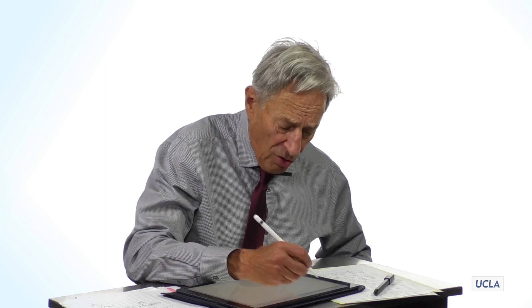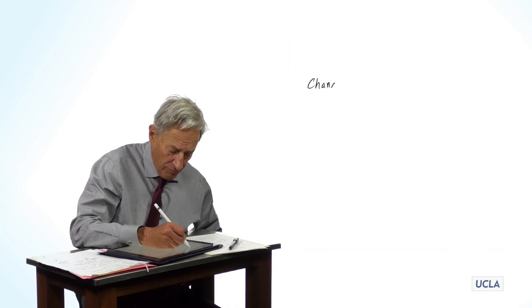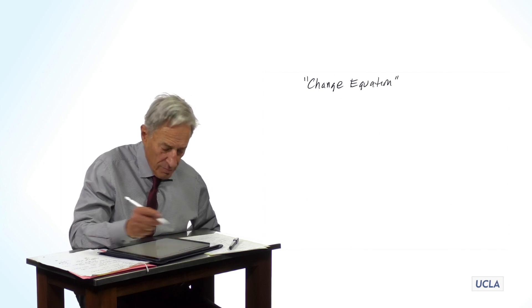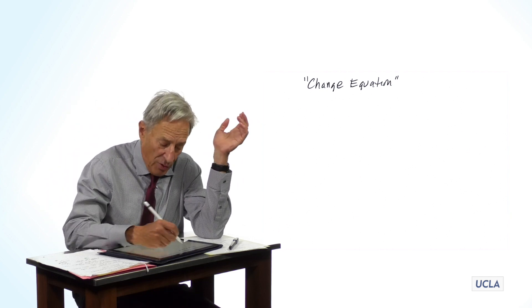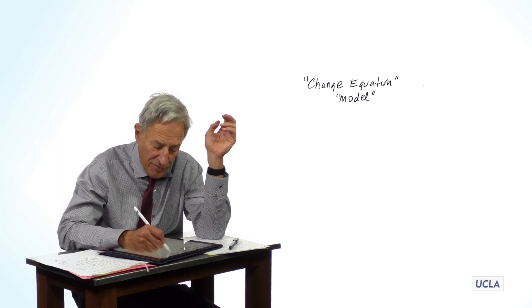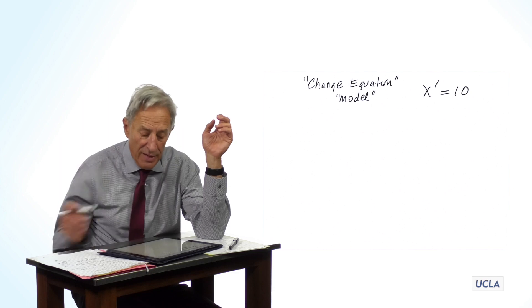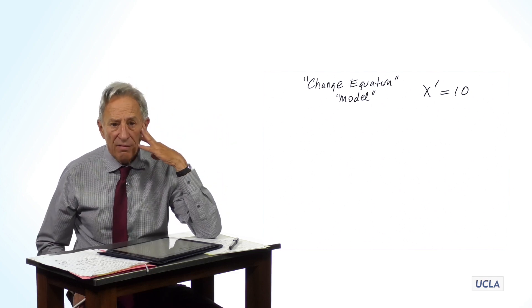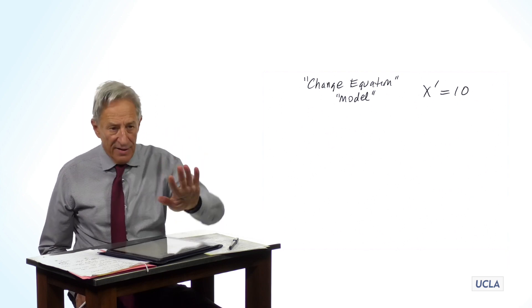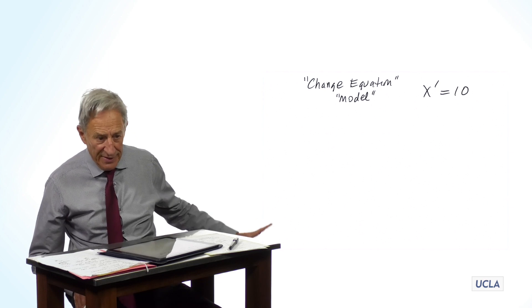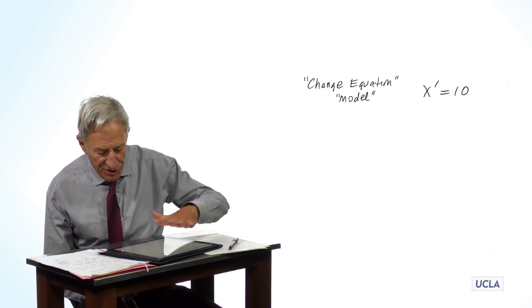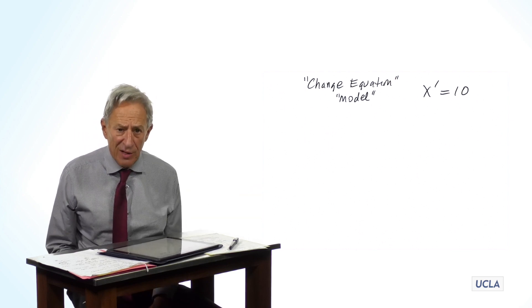And so our first simple change equation is now in front of us, it's x prime equals 10. And we're going to call that a change equation. So our first change equation, and change equation, another word for change equation, is a model. And so our first model or change equation is the model x prime equals 10. Now you ask, what do you do with that? And that's an excellent question that we're going to deal with today. But I'm going to hold that off right now. Right now, we just have this change equation. The change equation is x prime equals 10.